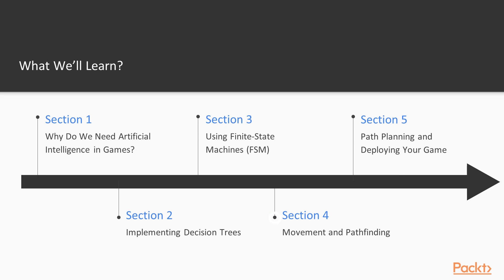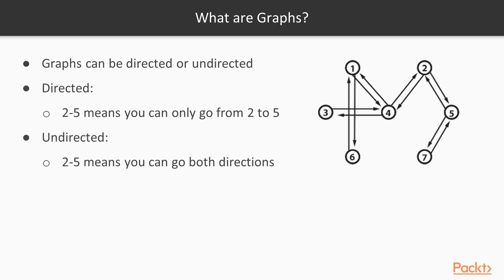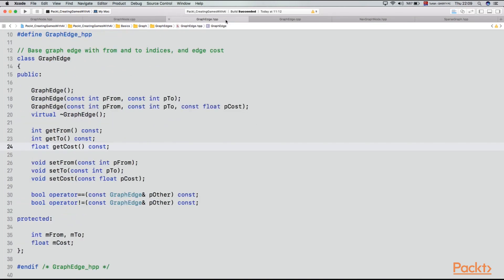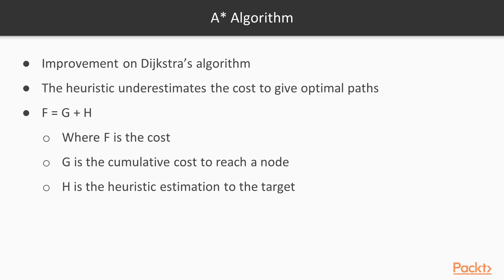In the fourth chapter, we will talk about graphs and pathfinding algorithms. We will learn how to use graphs for pathfinding, how to convert our scene information into a graph, how to represent graphs in code, implement our graph and navigation graph classes, and when to use which graph search algorithm and how to implement the A* algorithm.